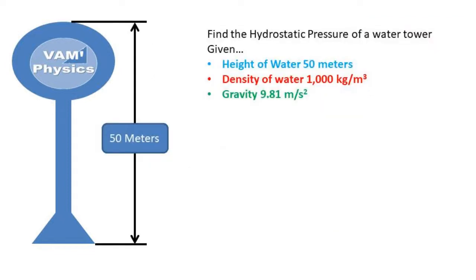Let's go over a simple hydrostatic pressure problem that involves a water tower. We are given the height of the water in the tower of 50 meters, density of the water of 1,000 kilograms per meter cubed, and gravity of 9.81 meters per second per second. We need to find the pressure inside the water tower at its base.